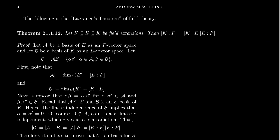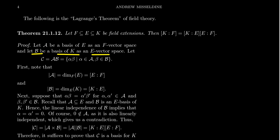This will be very important as we study Galois theory, because these degrees of field extensions actually have something to do with indices of subgroups when we look at the Galois group — but we get a little ahead of ourselves there. So let's prove this identity. This is a counting argument: let A be a basis of E when we view E as an F-vector space, and let B be a basis of K when we view K as an E-vector space.